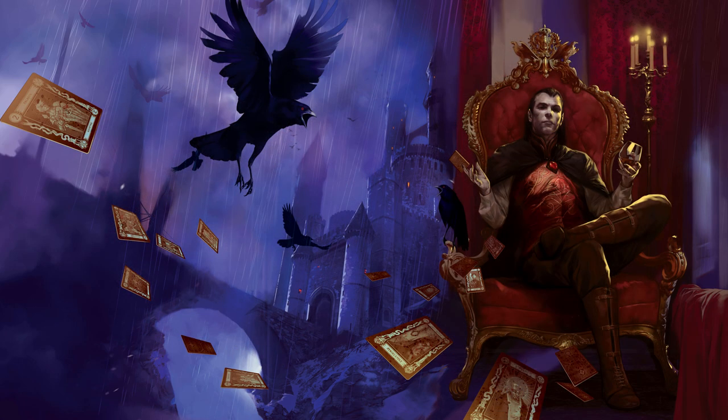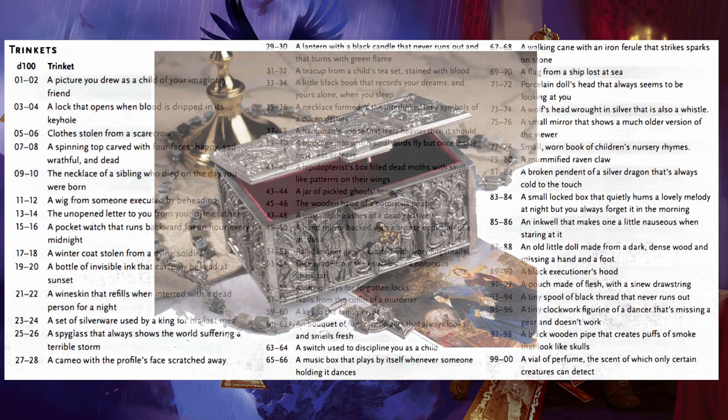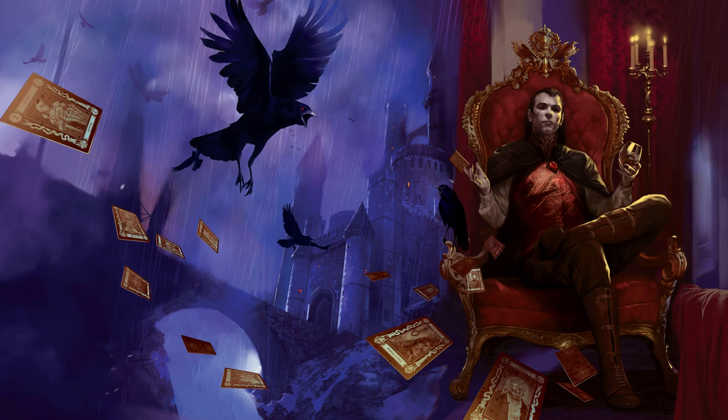Trinket: One random character finds a lost trinket. Read: 'You kick something — a trinket buried in the dust.' To determine what the character finds, roll on the trinket table as described in Appendix A.